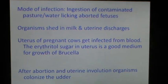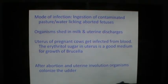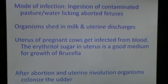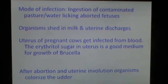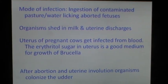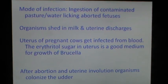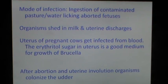The mode of infection for brucellosis is the ingestion of contaminated pasture, water, and licking of aborted fetuses. The organisms are shed in milk and uterine discharges. The uterus of pregnant cows gets infected from the blood. The erythritol sugar in the uterus is a good medium for the growth of Brucella. After abortion and uterine involution, organisms colonize the udder.